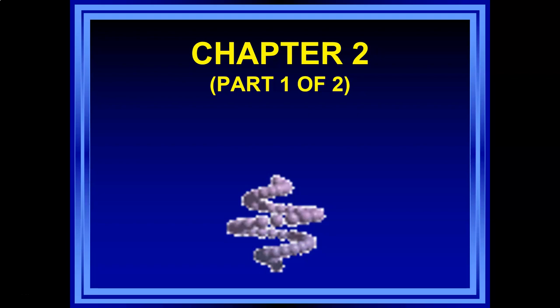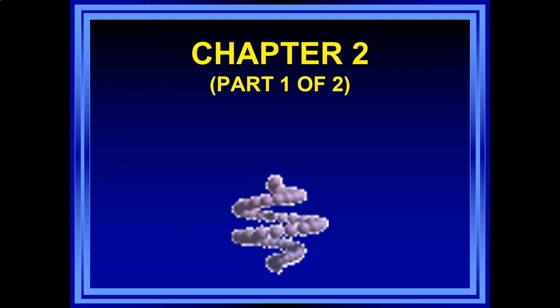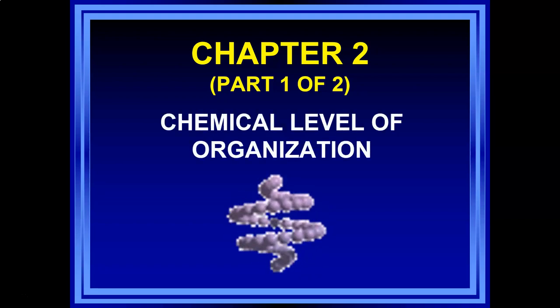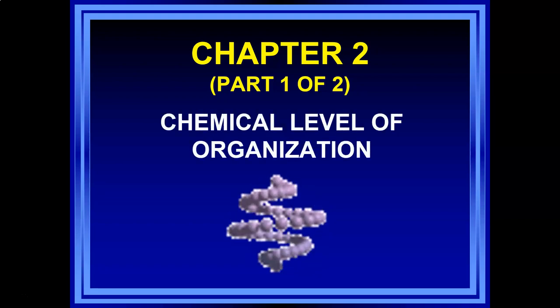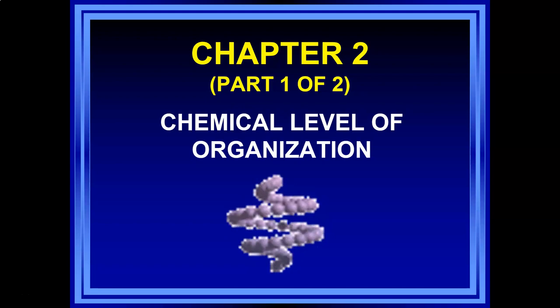Hi, Biology 210. This is Joy Colley. We're off to a pretty good start this semester, so we're going to go ahead and continue with the lecture material. We're going to look at Chapter 2. Chapter 2 will be divided into two sections, so there'll be two separate videos. This is the first part, and we're interested now in some chemistry — the chemical level of organization.